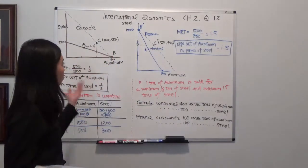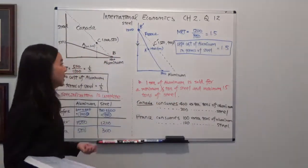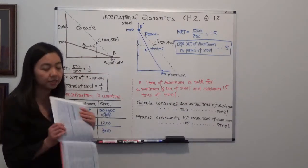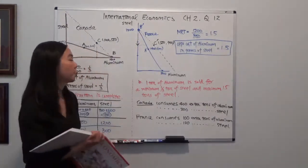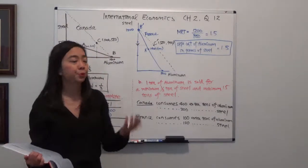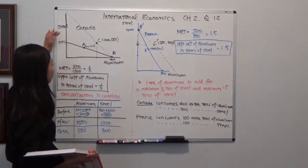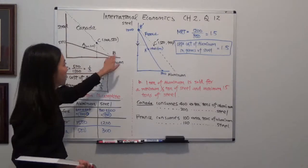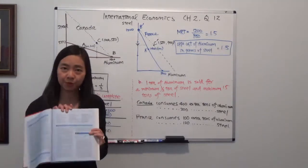So in this question, we have two countries, Canada and France. Each of them has a production possibility listed in table 2.8. We're required to draw the production possibility curve, putting aluminum at the horizontal axis and steel on the vertical axis, according to the information given.